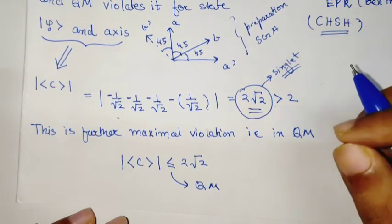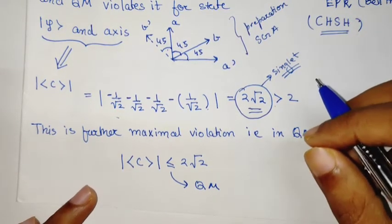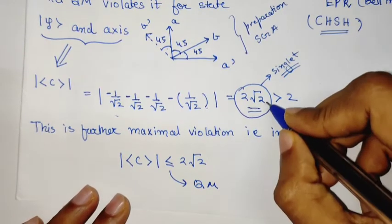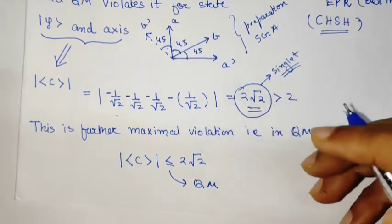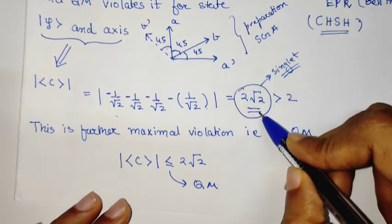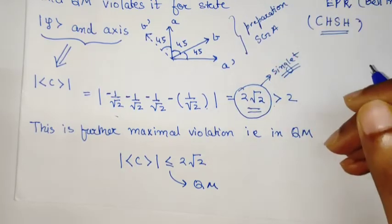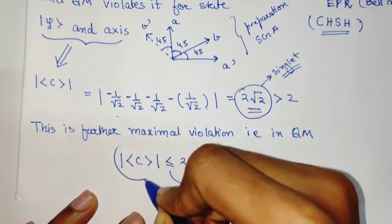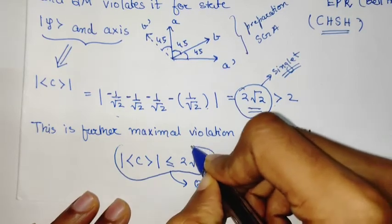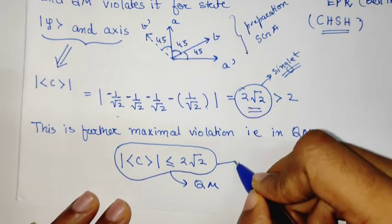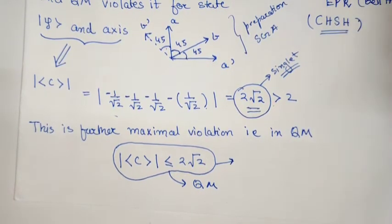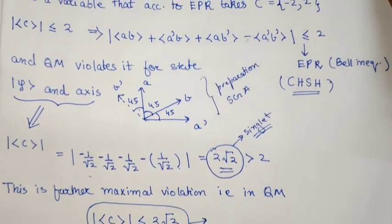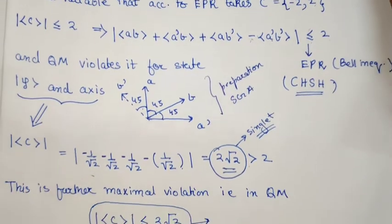For any state, this expectation value cannot exceed 2√2. I'm not proving this result, but the point is that 2√2 is the maximal violation. Hence we get an inequality that is quantum mechanical, meaning this is what nature abides by.